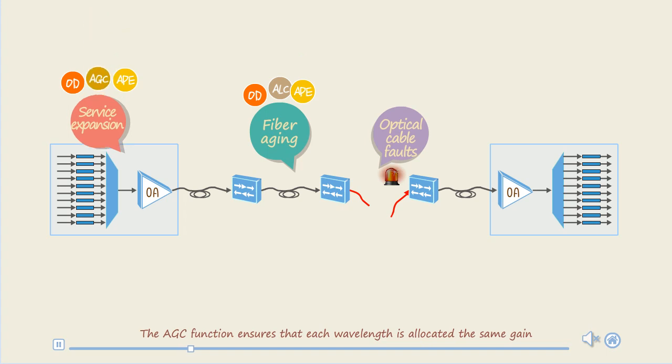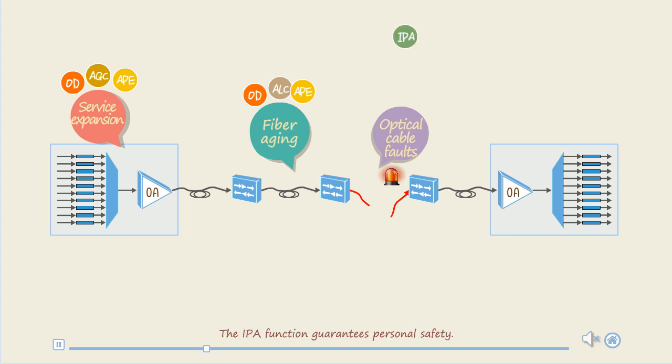The AGC function ensures that each wavelength is allocated the same gain when traversing an optical amplifier board. The IPA function guarantees personal safety. Let's have a look at these functions in detail.